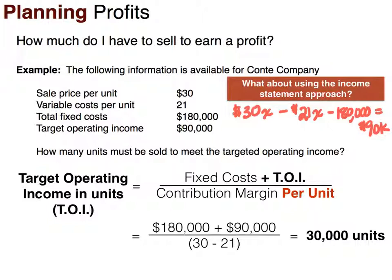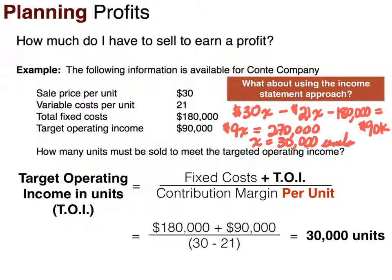To solve: 30x minus 21x is 9x. We get x on one side by adding 180,000 to both sides, giving us 270,000. Dividing both sides by 9, x equals 30,000 units. So either method will give you the same answer.